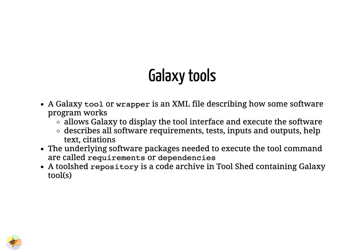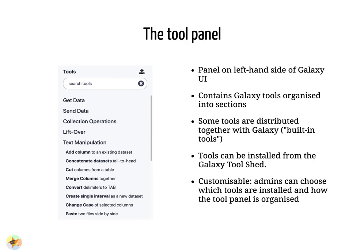A tool shed repository is a code archive in the tool shed containing Galaxy tools. The tool panel on the left-hand side of a Galaxy site contains all of the tools available on that Galaxy instance, arranged into sections. The text manipulation section has been expanded here as an example. There are tools that come with the Galaxy code, such as the uploader, but the vast majority of tools on a public Galaxy have been installed from the tool shed.